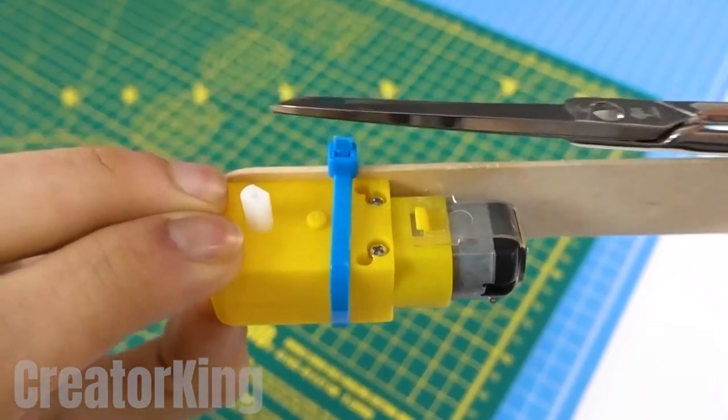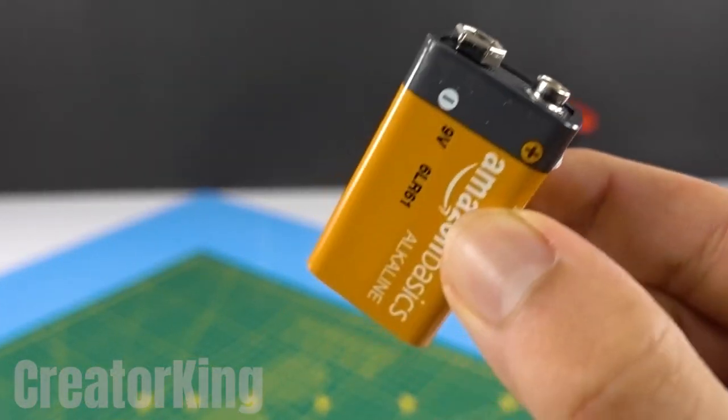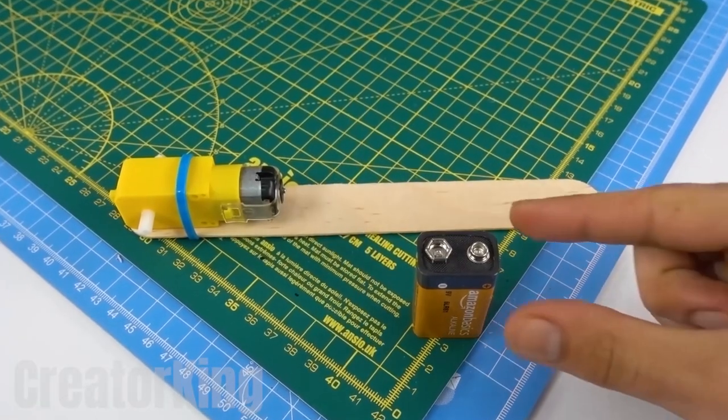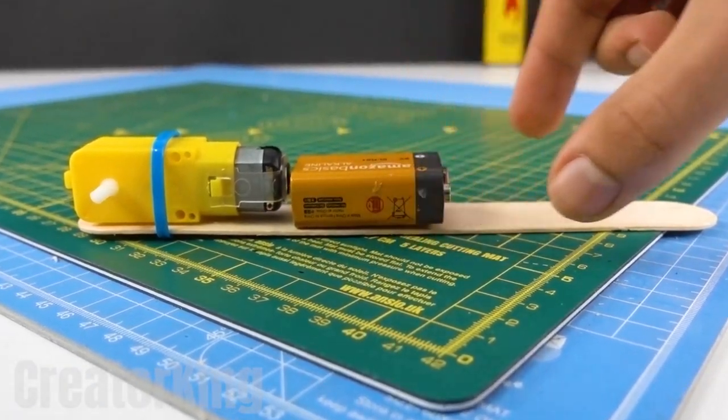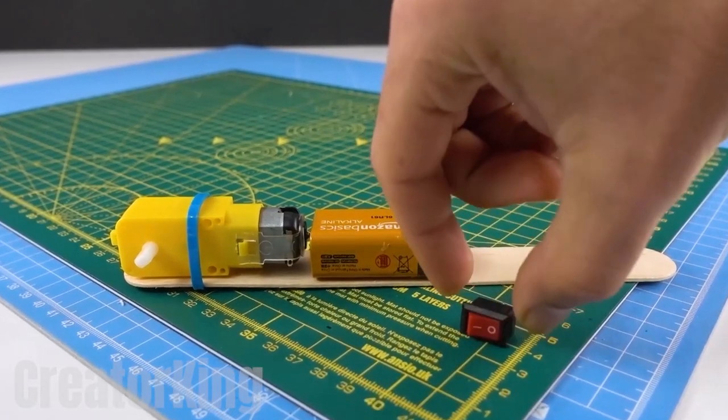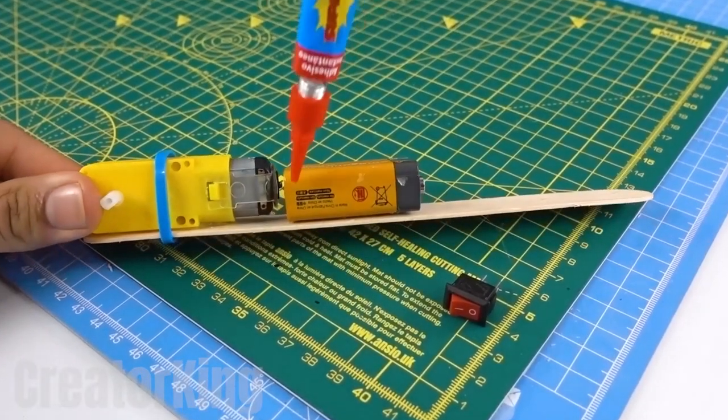Once well secured, cut off the extra and get a square 9V battery like this one from Amazon. Apply instant glue to the popsicle sticks right in front of the motor and glue the battery horizontally. Also, get our usual switch which will fuse to the side of the battery with some more of our super glue.